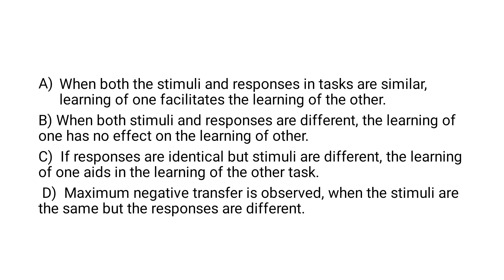When both stimuli and responses are the same, learning will take place. When both stimuli and responses are different, the learning will have no effect — that is zero transfer. If responses are the same but stimuli are different, learning will still take place. Either stimuli should be the same or responses should be the same for learning to take place. When stimuli are different and responses are also different, no learning will take place. Maximum negative transfer is observed when stimuli are the same but responses are different.